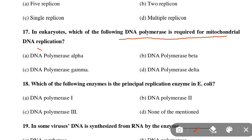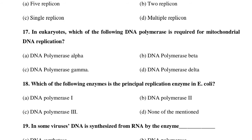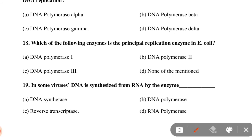Next MCQ: In eukaryotes, which of the following DNA polymerases is required for mitochondrial DNA replication? Option A: DNA polymerase alpha, Option B: DNA polymerase beta, Option C: DNA polymerase gamma, Option D: DNA polymerase delta. Option C is correct — DNA polymerase gamma.